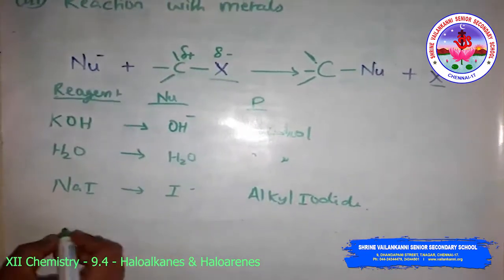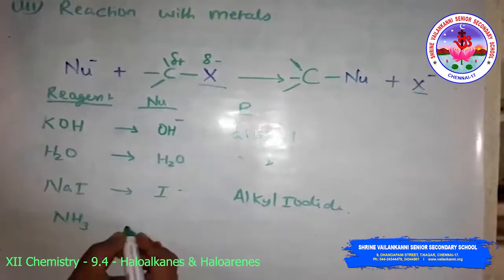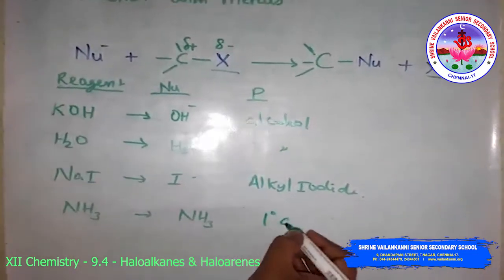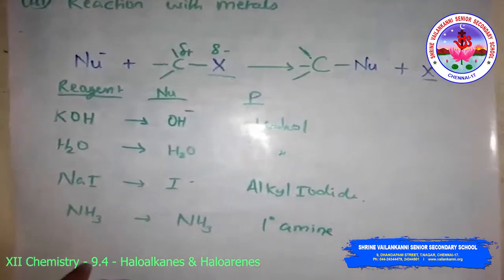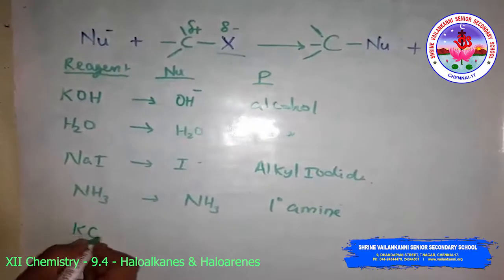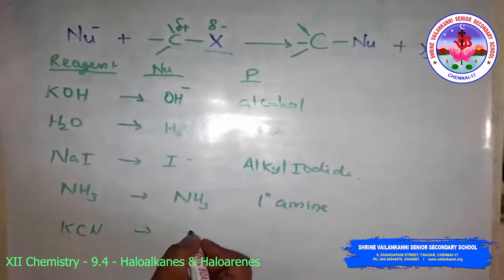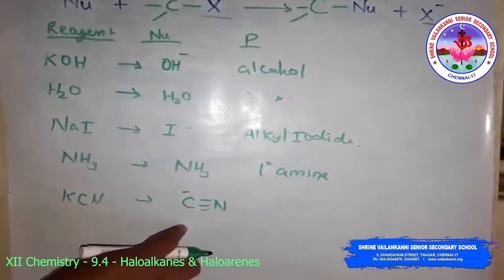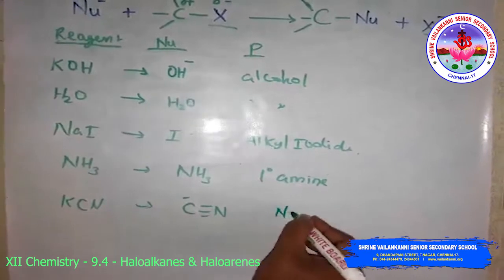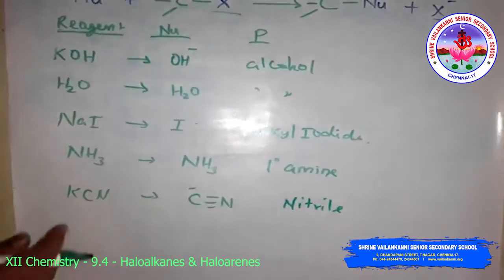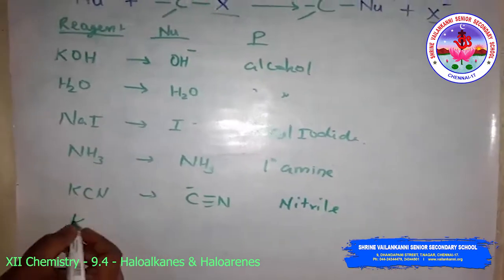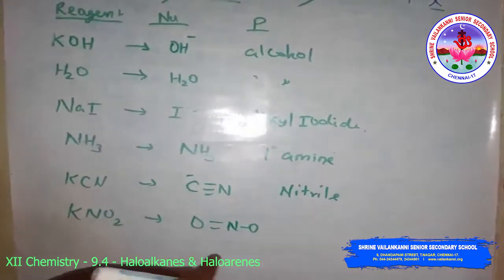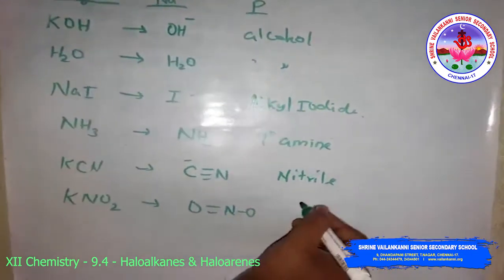With ammonia as reagent, the nucleophile is ammonia and the product is a primary amine. With KCN as reagent, the cyanide ion is the nucleophile. With KNO2 nitrite, the NO2 minus is the nucleophile and the product is an alkyl nitrile.